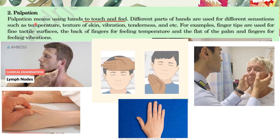Next is palpation. Palpation means touching with your hand. Different parts of the hands are used for different sensations. For example, fingertips are used to palpate lymph nodes, the back of the hand is used to check temperature, and the palm is used as a flat surface for other sensations.